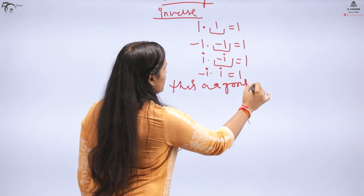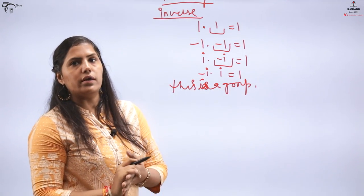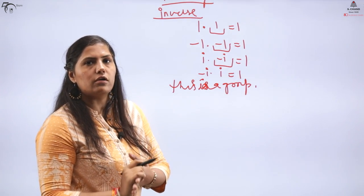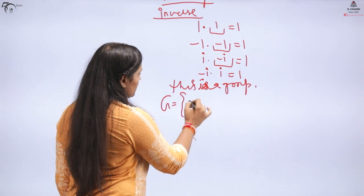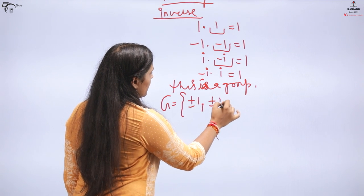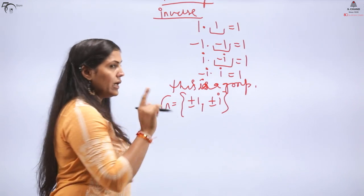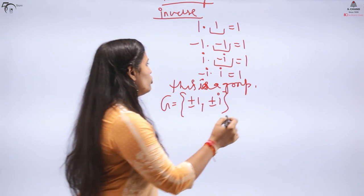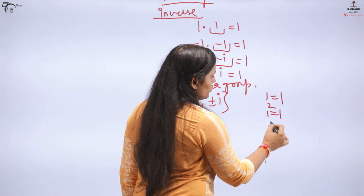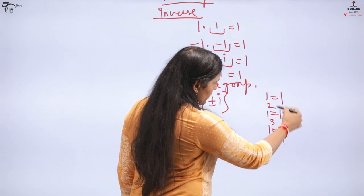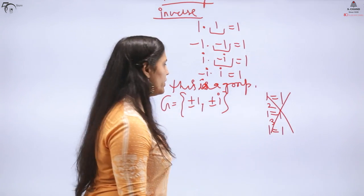Identity element: generally the identity is 1. Now for the inverse part, can you figure out the inverse? 1 inverse is 1. -1 inverse is -1. Iota inverse is -iota. -iota inverse is iota. So this is a group.